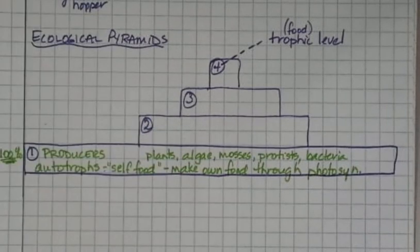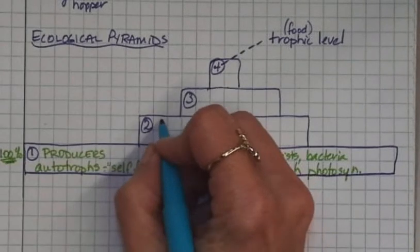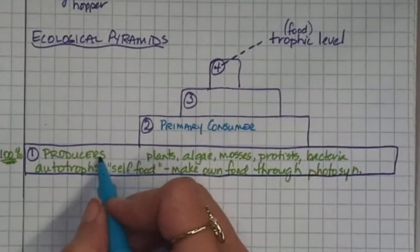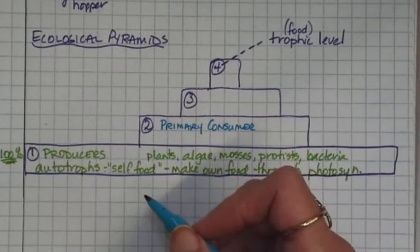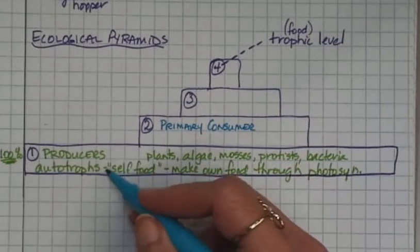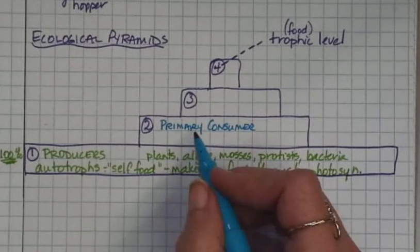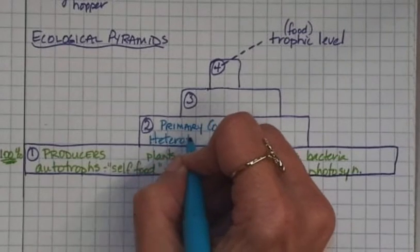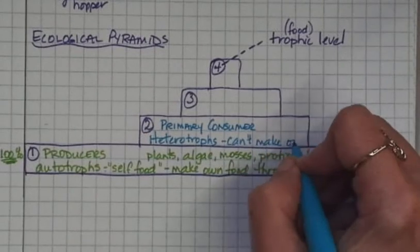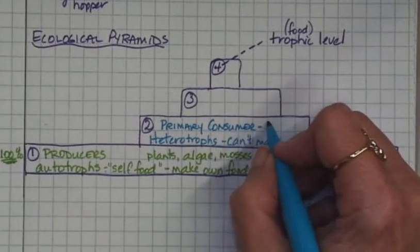Now, the next thing up, the next level up would be the primary consumer. And the primary consumer eats the producer. So the second step up here, we have primary consumer. Notice how the whole level is smaller than the other one. Because when you transfer energy from the producer to the primary consumer, a lot of energy is lost in the form of heat. We just can't take it all in. Think about the fact that the cow has a body temperature. So all that energy that it's eating from the grass, a lot of energy is going to produce that temperature, that heat. And so it's not energy that's harnessed into being reproductive energy or anything like that. But this is the primary consumer. These guys are heterotrophs. They can't make their own food. Heterotrophs can't.